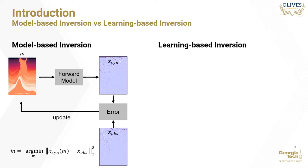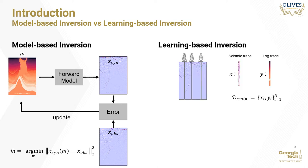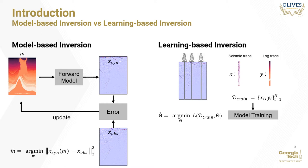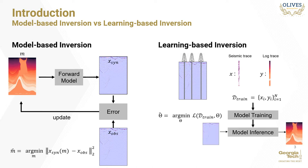In the optimization problem, the L2 norm squared of the difference between synthetic seismic and the observed seismic is minimized over the space of model parameters M to find the optimal model M-hat. In contrast, learning-based inversion works by extracting the well traces and the corresponding seismic traces at all well positions in the seismic survey. The seismic traces form the features, while the well logs form the labels for the learning algorithm. The dataset is then used to train the machine learning algorithm by minimizing a loss function over several training epochs. Once trained, the model is used to estimate a well log trace for each seismic trace, resulting in a rock property section.